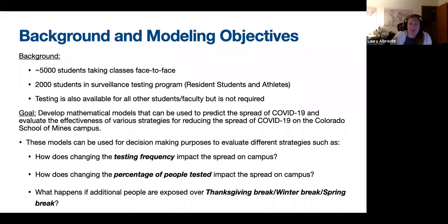Some quick background information: we have approximately 5,000 students taking classes face-to-face this semester and last semester. There are 2,000 students in our surveillance testing program, which consists of all resident students and athletes required to test at some testing frequency. This started as once every other week at the beginning of the fall semester and switched to once a week at about mid-October.